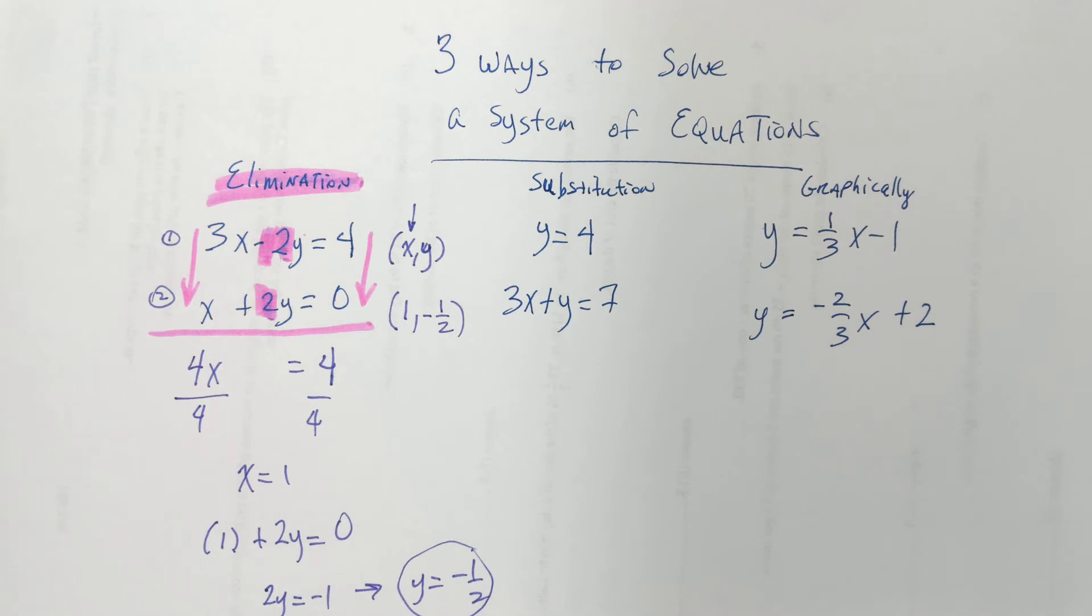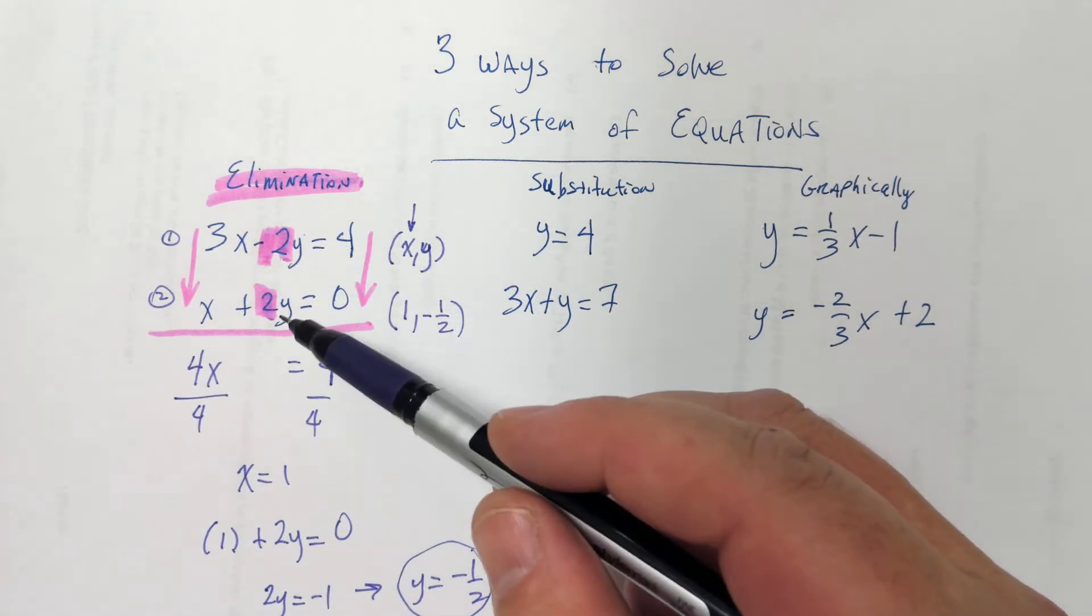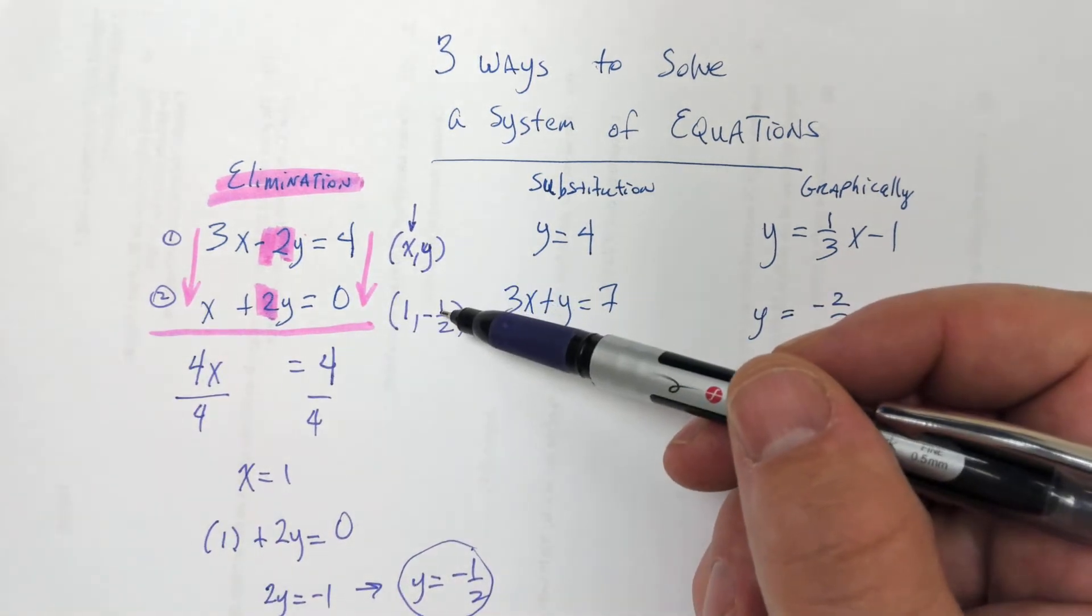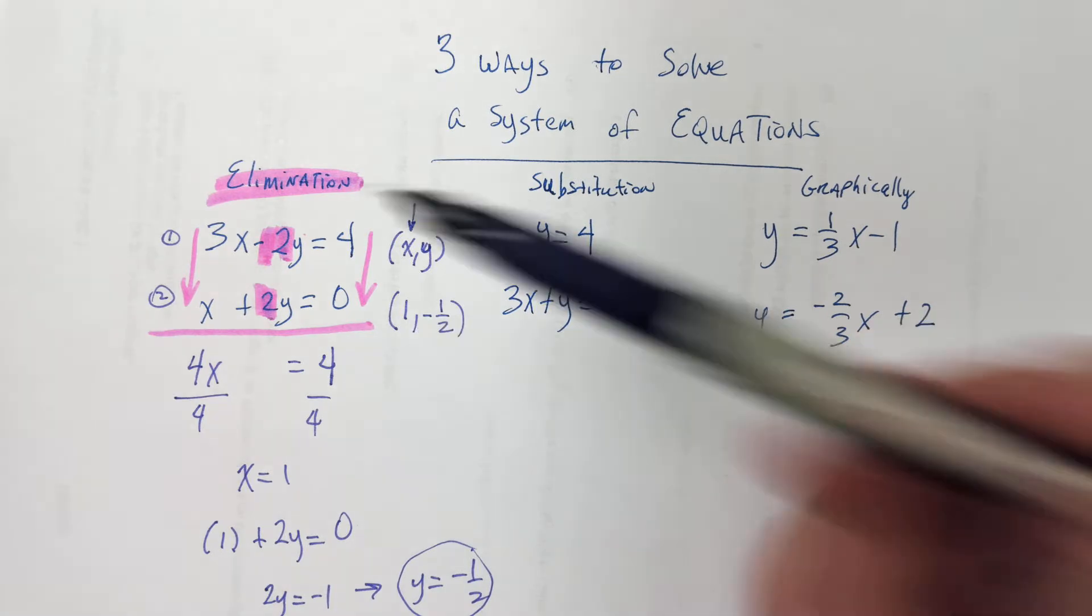Yeah? So, we're not going to do it right now. But, if you wanted to know if you had the right answer, all you would do is take this x and this y and plug it into both. And if it was true for both, then you'd be good. In fact, I think some of the problems in the book, what they do is they give you a system of equations and they give you an ordered pair, and all they do is ask you if it's true or not. If that's the answer. So, you just plug it in.